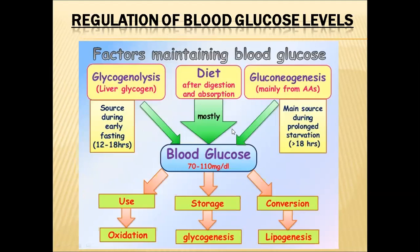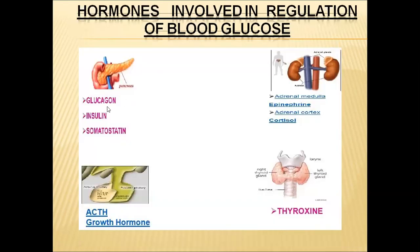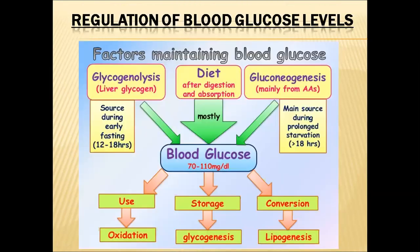Several hormones help maintain blood glucose levels. These are glucagon, insulin, and somatostatin — released by the pancreas; adrenocorticotrophic hormone (ACTH) and growth hormone (GH) — released by the pituitary gland; epinephrine and cortisol — released by the adrenal gland; and thyroxine — released by the thyroid gland. These seven hormones help regulate blood glucose levels.